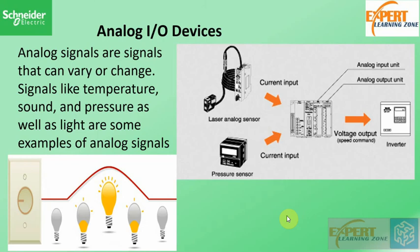Going back to our light switch example, let's now install mood lighting in our home. Instead of the regular on/off switch, we are going to use a dimmer switch. The dimmer switch will vary the resistance of the line, causing the light to dim or brighten as we choose. The voltage supply to the light will not be a constant level voltage but rather it will be between the upper and lower limit levels. This is usually represented by a sine wave.